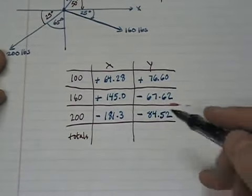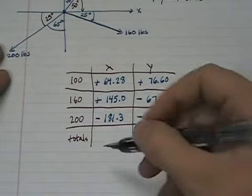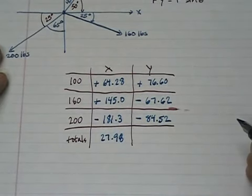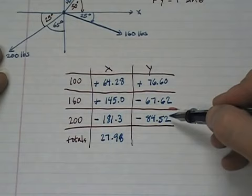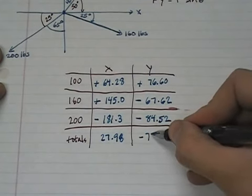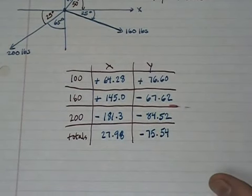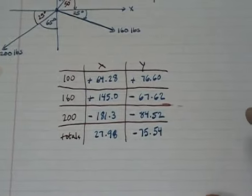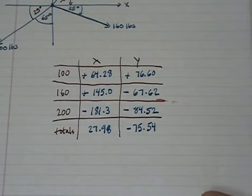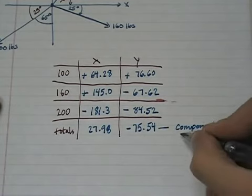Okay. Now x components are all in the same direction so they can be added just using simple arithmetic. And I add these three numbers and I get 27.98. And I add the y components again. Same direction so they'll add arithmetically. And if I add those up I get negative 75.54. So the x component is 27.98 pounds and the y component is negative 75.54 pounds. That has found the components of the resultant.